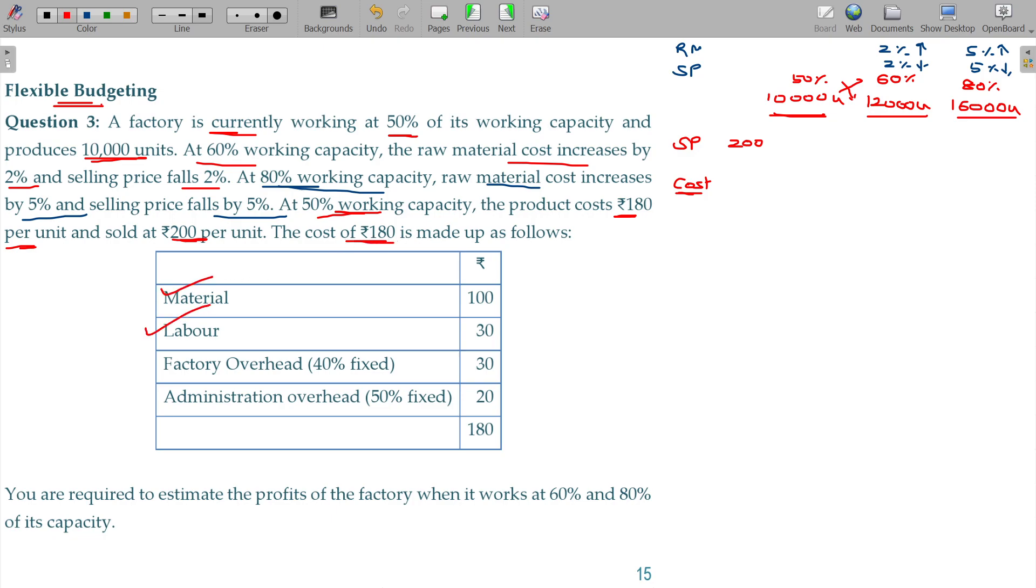labour, factory overhead where 40% is fixed and so on. 40% is fixed and 60% is variable. So 18 rupees is the variable, 12 rupees is fixed. Whenever the fixed overhead is given per unit basis, it is suitable only for the given level of operation.